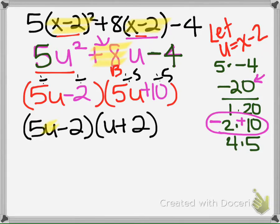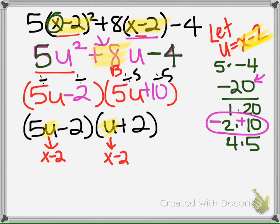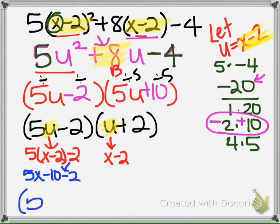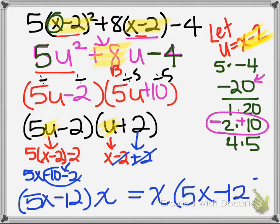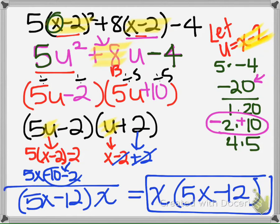Here I can factor out a 5. Now we're going to substitute x minus 2 back in for u to get the x's back. There was a 5 next to the u, so I need to multiply this: I would have 5x minus 10, and then bring down the minus 2, so we would have 5x minus 12 when we combine these. Over here we would have x minus 2 and then plus 2, which makes 0. And then we have our factored form. We could also write this in another way — either way is correct.